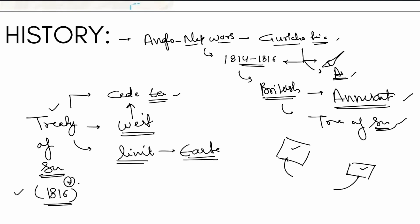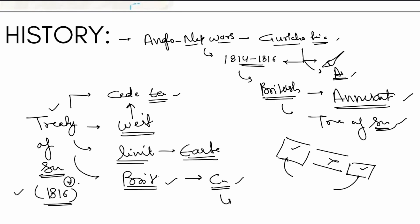Nepal remained an independent kingdom — the British did not go to Nepal to rule it, because it was very small and had nothing to give. However, a British resident was established in Kathmandu, the capital of Nepal, and Nepal's foreign policy was in the hands of the British after this, making it essentially a domestic country.